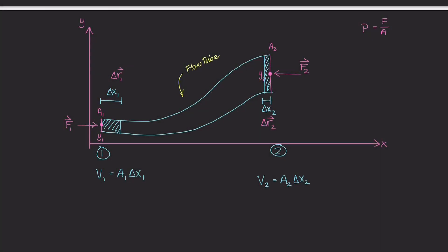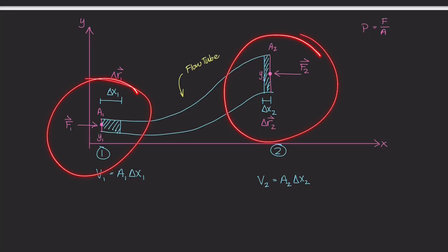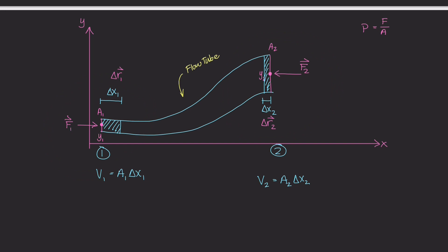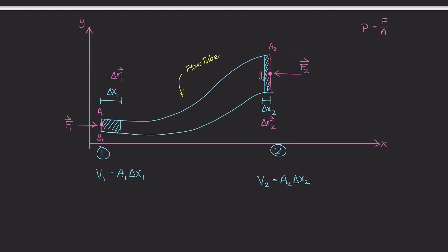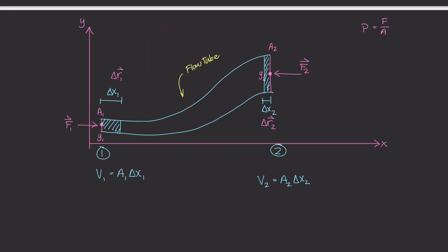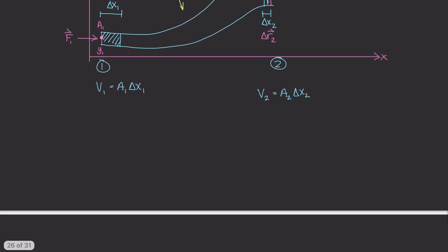Welcome back. In the last video, we drew out all of these labels all over this place. At point one, we have our external forces, and at point two, we have our F2 force on this flow tube. In this video, I want to calculate the work being done at point one and the work being done at point two — the external work done by these external forces.